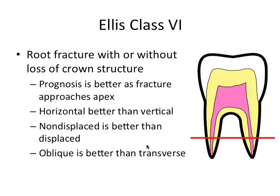For a vital tooth with a root fracture, you would splint and observe. If the coronal segment becomes non-vital, you would perform an apicoectomy and apexification — remove the apical portion and then close the wide lumen of the pulp canal. Very rarely, both the coronal and apical segments become non-vital, in which case you'd root canal the coronal portion and perform an apicoectomy on the apical portion.